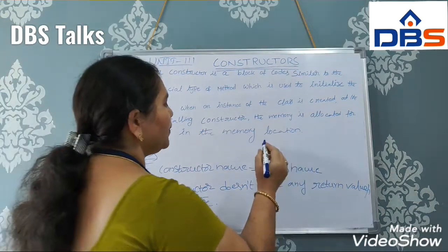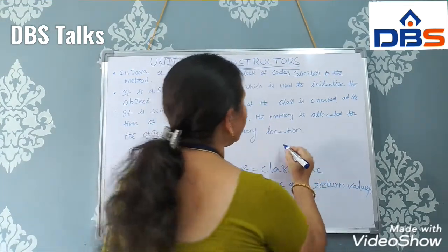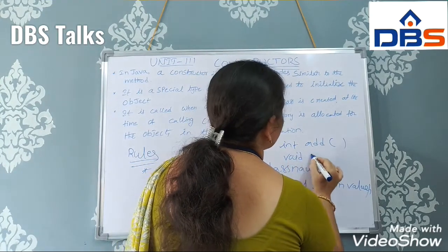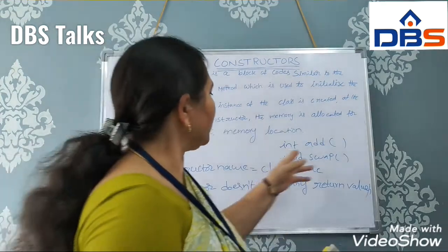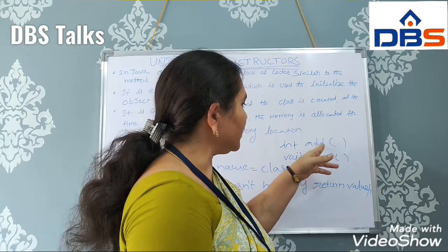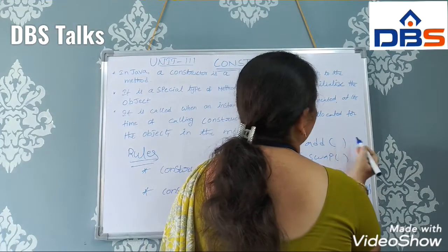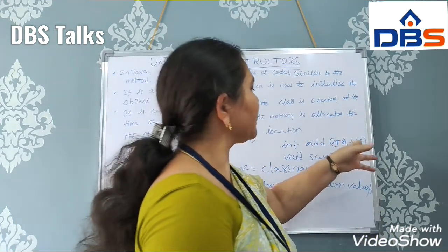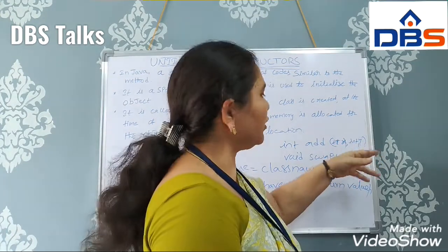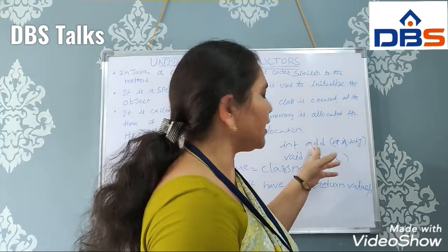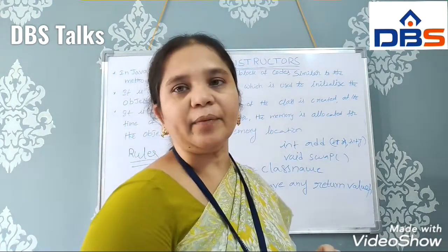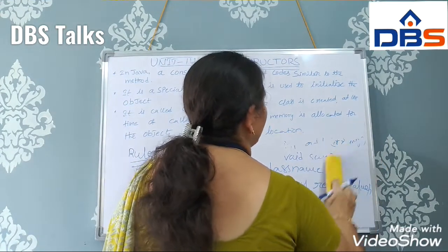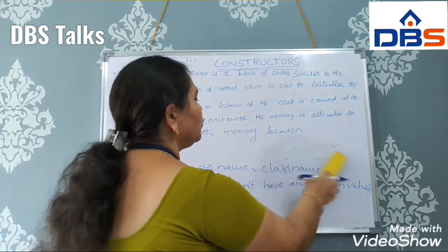For example, in an addition function in C, we use two integer variables, perform addition, and return an integer result. But a constructor does not follow any return type or return value. We are not using any return values. These are the two rules we must follow.